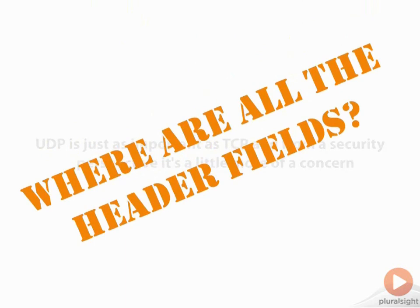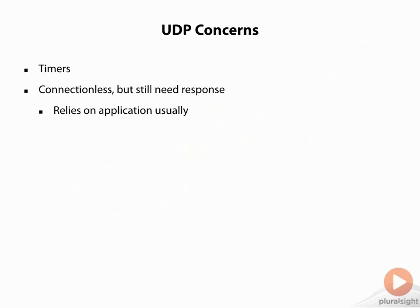The question is: where are all the header fields? UDP doesn't have them in relation to TCP. TCP has sequence numbers and acknowledgments — all those fields you remember. But UDP doesn't have those fields, and that means we are not able to track as much information, and that tends to be a problem.